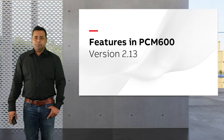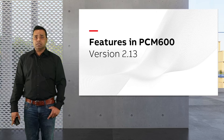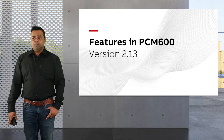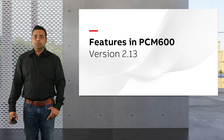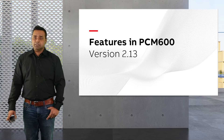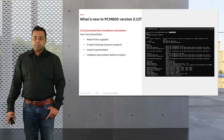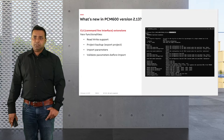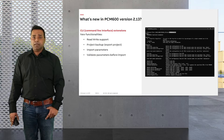Let's have a quick look at the new features — a couple of important features introduced with PCM 600 version 2.13. These are in addition to the numerous improvements in the form of bug fixes and performance enhancements also addressed with 2.13. The first on the list is the command line interface.